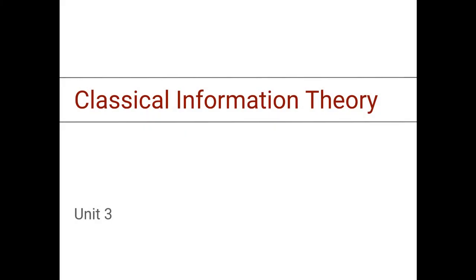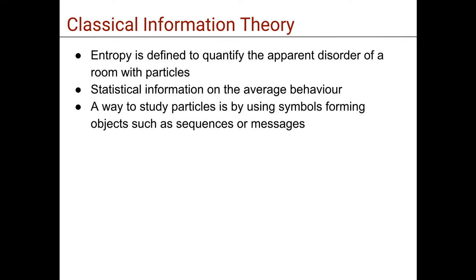We saw in the last lesson how entropy is defined to quantify the apparent disorder of a room with particles, and how it can provide statistical information on the average behavior of those particles in the form of a description of their statistical properties. In information theory, a way to study particles is by using symbols forming objects, such as sequences or messages, and the question is transformed into how ordered or disordered a sequence of symbols may look like instead of a room with particles.